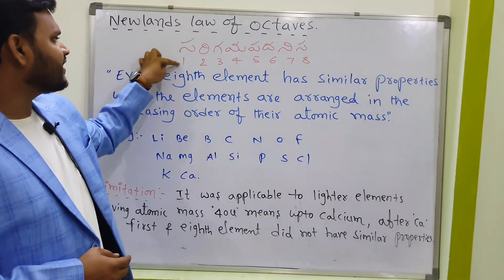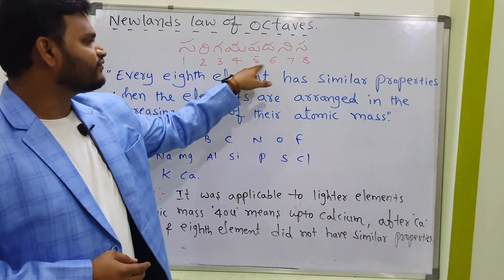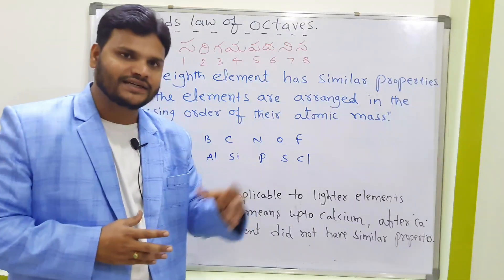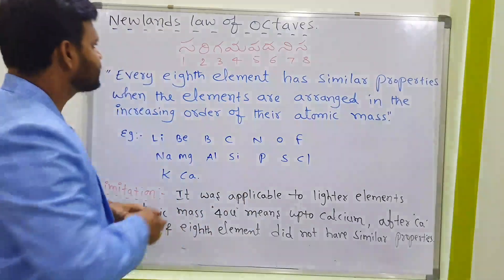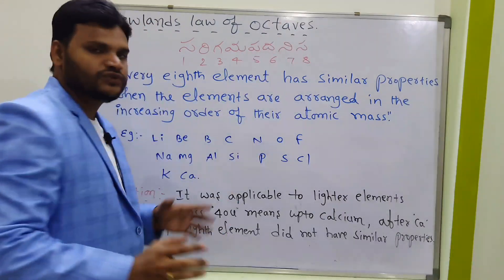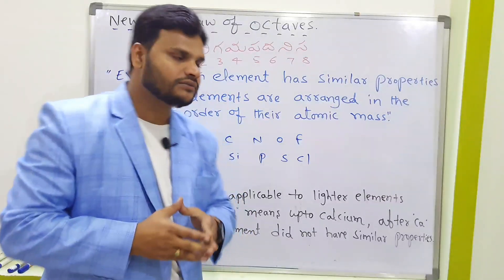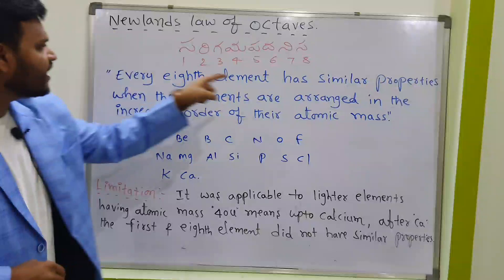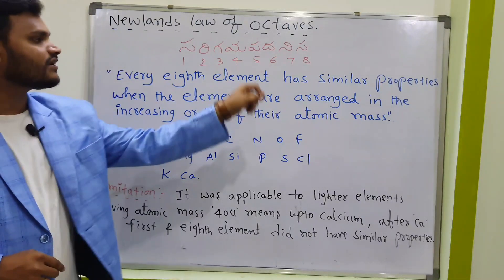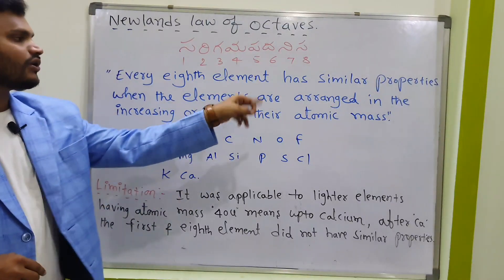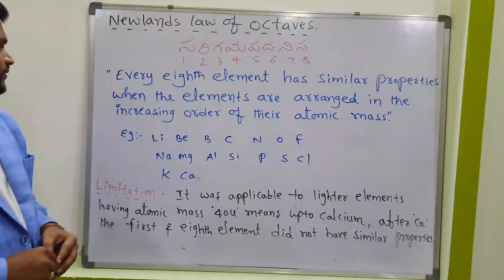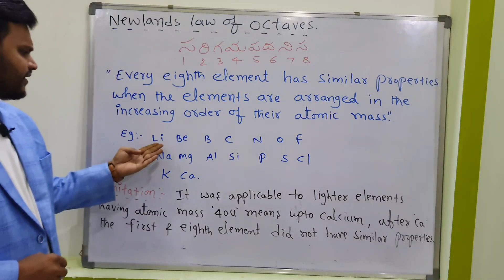This is the 1st, 2nd, 3rd, 4th, 5th, 6th, 7th, 8th note. When you look at the 1st and 8th note, they are similar — both are 'Sa.' Newland's statement is: every 8th element has similar properties when elements are arranged in increasing order of their atomic mass.